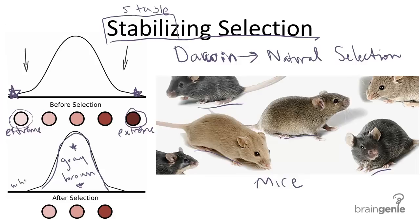Because the white coats and the black coats are probably the colors that stand out the most in their particular environment, and therefore they are more susceptible to predators. So predators kill the white and black, and therefore the gray and brown mice are more available.